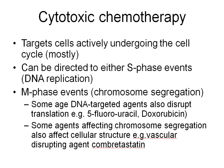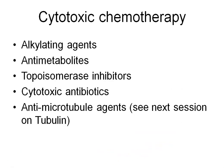Some DNA-targeted agents will also disrupt translation — for example, 5-fluorouracil and doxorubicin will inhibit translation as well as affecting DNA integrity. Some agents that affect chromosome segregation, such as the tubulin inhibitors, can also act as vascular disrupting agents, and combretastatin falls into this category. The main classes of cytotoxic chemotherapy include alkylating agents, anti-metabolites, topoisomerase inhibitors, cytotoxic antibiotics, and antimicrotubule agents, which will be covered in the next session on tubulin inhibitors.